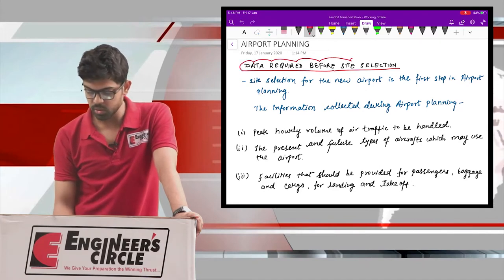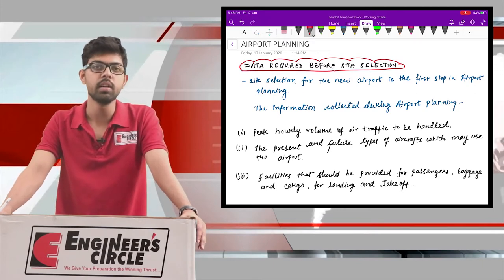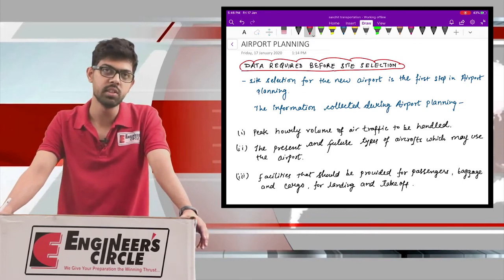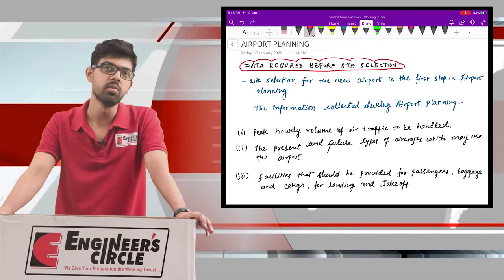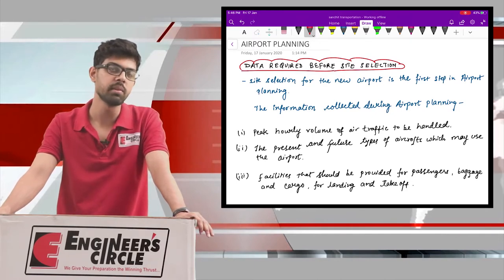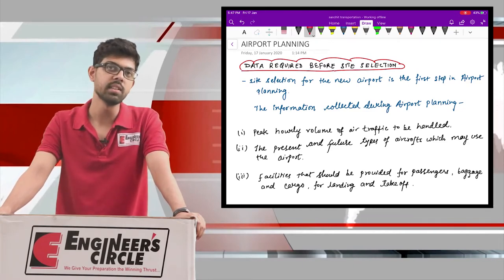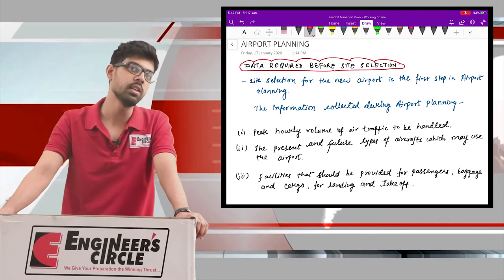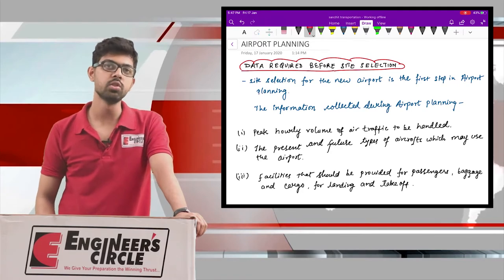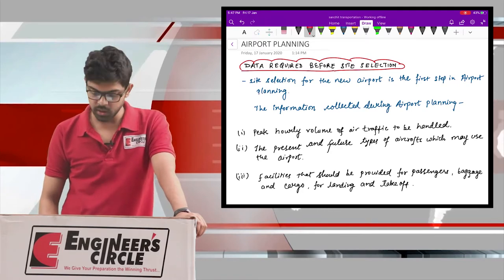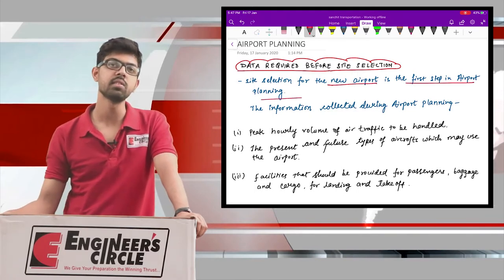The first consideration is the data required before site selection. Whenever airport construction is suggested, we need to study certain parameters to determine which site is suitable, because a lot of parameters need to be studied before deciding the most suitable site for airport construction. The site selection for a new airport is the very first step in airport planning.